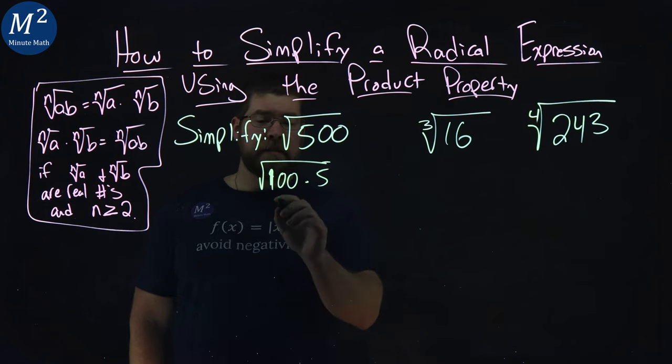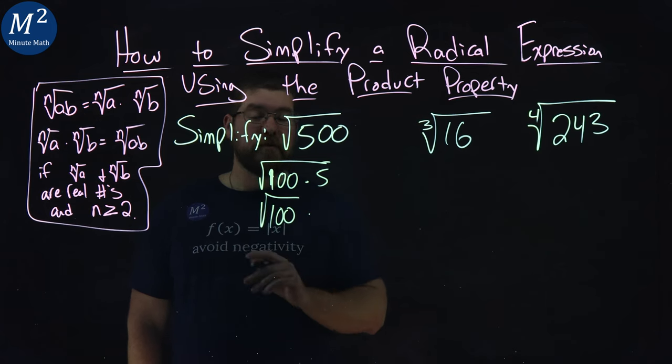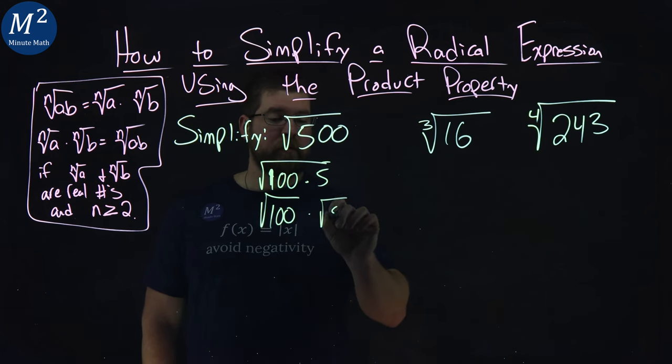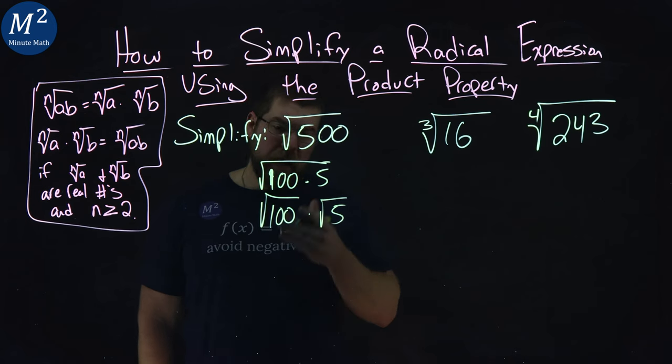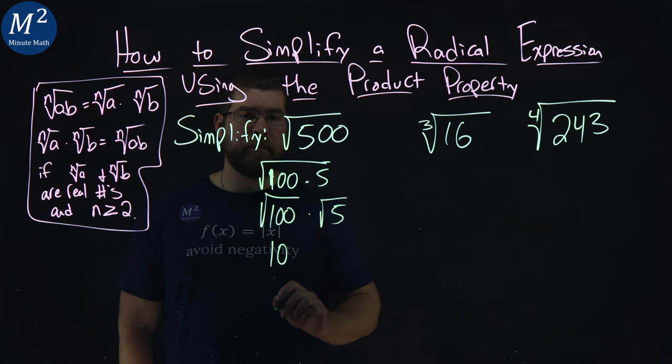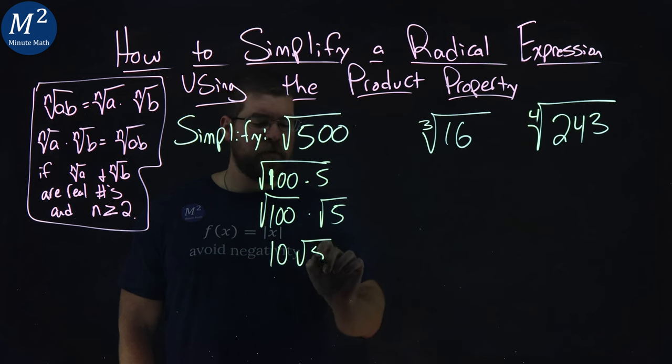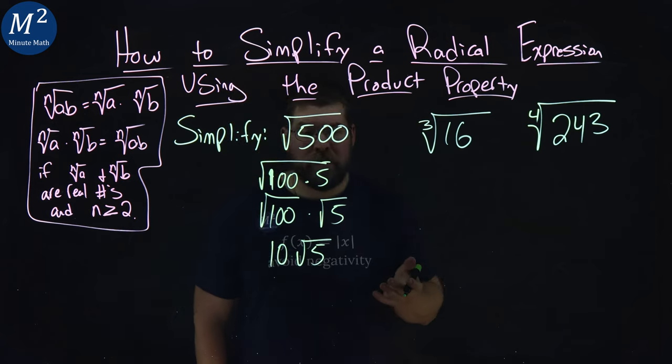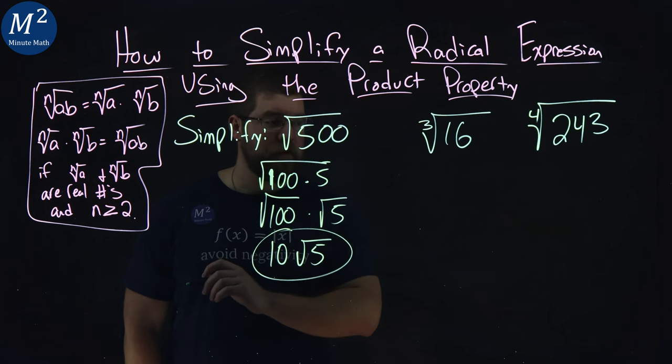The product property says that we can split this up to be square root of 100 times the square root of 5. And then from there, we have the square root of 100, easy to know, is 10. So we have 10 square root of 5 left over. There's nothing else I can do to simplify this. And we have our answer.